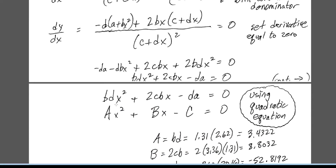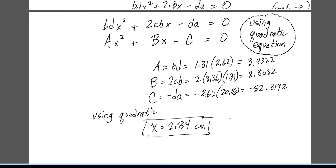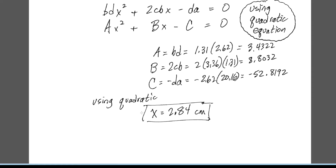For the quadratic formula, b·d is our coefficient A, 2·c·b is our coefficient B, and −d·a is our coefficient C. Using a calculator program to solve the quadratic equation quickly by entering A, B, and C, we find that the level of soda in the can at the minimum center of mass is 2.84 centimeters from the bottom.